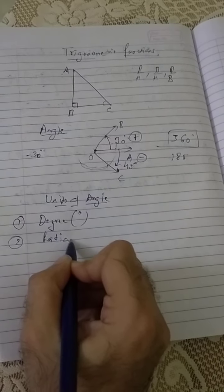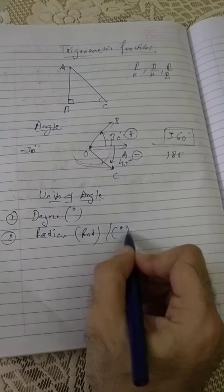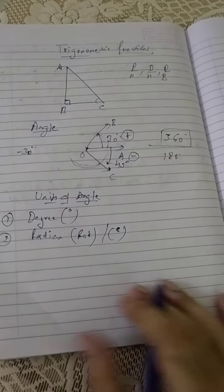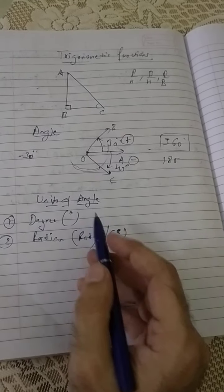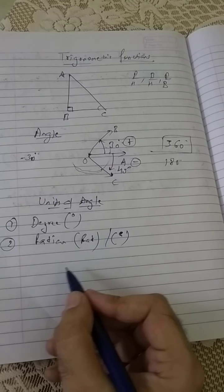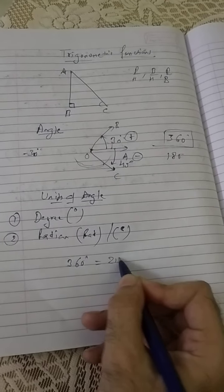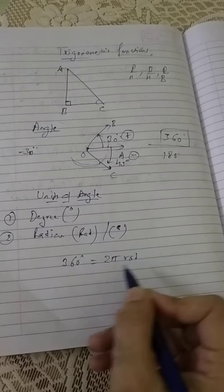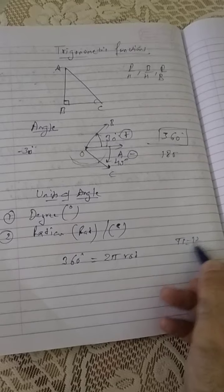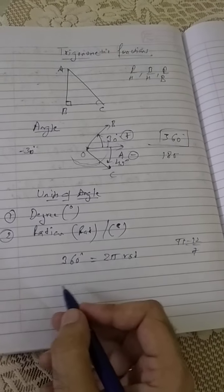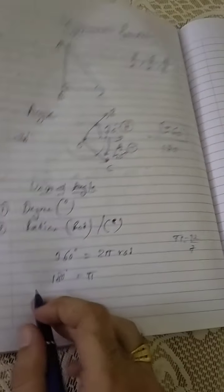But we have a scientific unit also which is called radian. Radian we write as rad sometimes, or we write c in superscript. In some textbooks we denote radian this way also. This is also a unit of angle only. What is the relationship between the two? The relationship is 360 degrees equals 2π radians, where obviously π is the same, 22 by 7. If I simplify to lower system then 180 degrees becomes π radian.